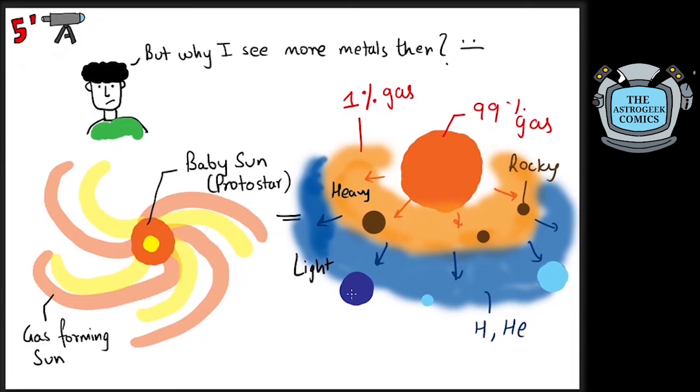Heavier stuff like rocks, dust, iron, gold and other metals remained closer to the sun and combined to form rocky planets like Earth. In fact, we now know this to be true through our missions that have studied the planets in the solar system.